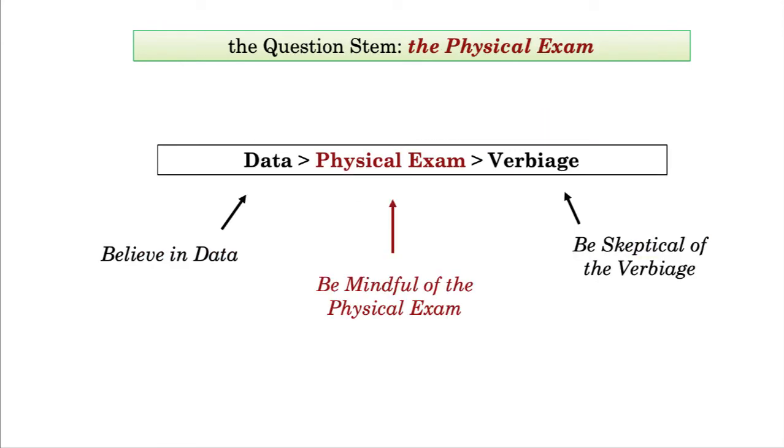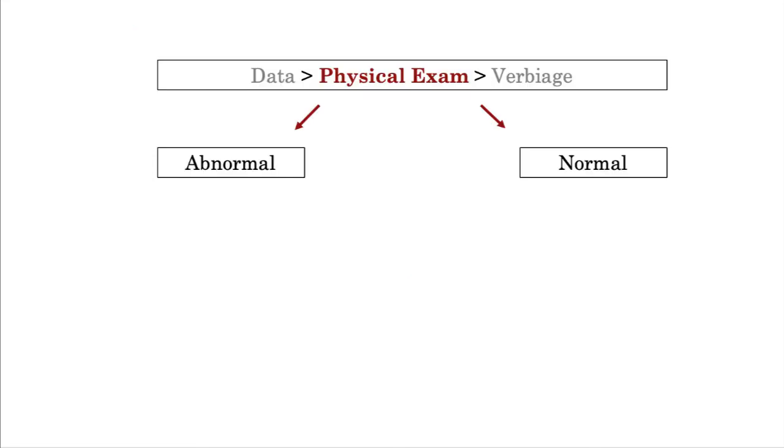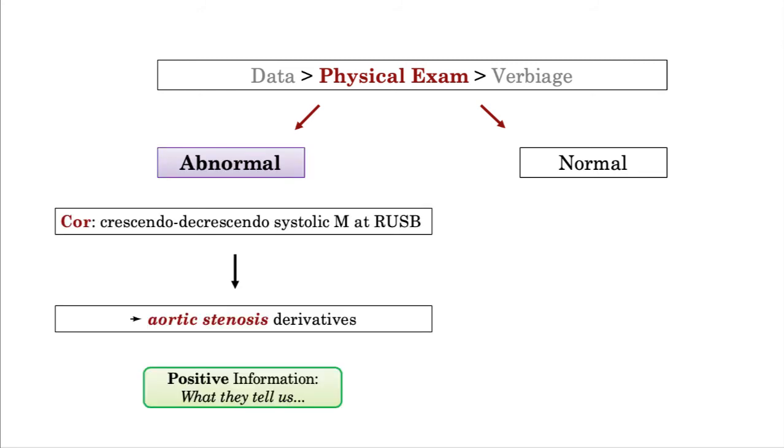Alright, we've spoken briefly about data and verbiage, so what can we squeeze from the physical exam? The physical exam is essentially binary. That is, it is either abnormal or normal. There are no shades of gray. Examples of abnormal would include a crescendo-decrescendo systolic murmur at the right upper sternal border. In this scenario, the question writer, with great efficiency, has just built an aortic stenosis vignette with either pathophysiology or pathology derivatives to follow. Another example might include dullness to percussion associated with decreased breath sounds. In this example, the exam declares the presence of a pleural effusion with any of a number of derivatives to follow.